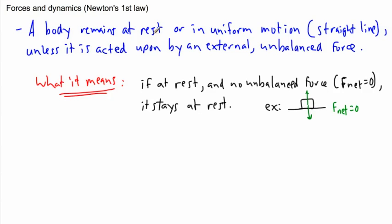I could make it not be at rest if all of a sudden I apply a force to the left. With no force to the right, it's going to start accelerating to the left. Now it can also be in uniform motion. A second example: if it's moving, it keeps moving in a straight line.